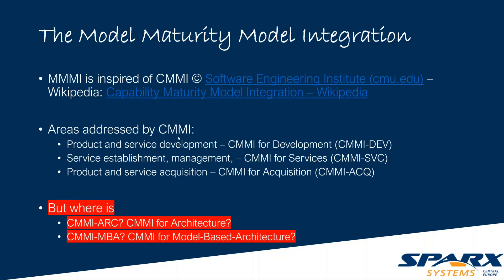In Europe it was more: 'I'm level one, I'm great' — it's initial, you have no defined process, you just develop. Then the second level is managed: 'we have a plan.' Then it goes to Defined and so on. But for models there was nothing — CMMI was for product and service development. There was a CMMI for services and for acquisition, but where is CMMI for architecture? Where is CMMI for model-based architecture? Because I don't want to touch the existing naming, I've named it Model Maturity Model Integration, related to Capability Maturity Model Integration.